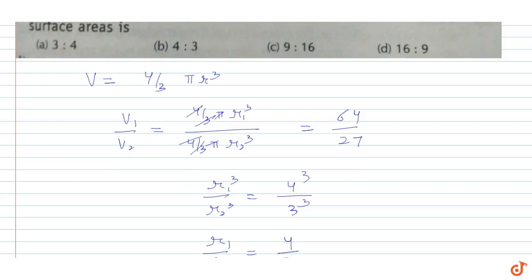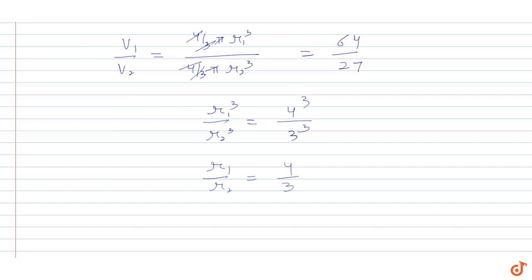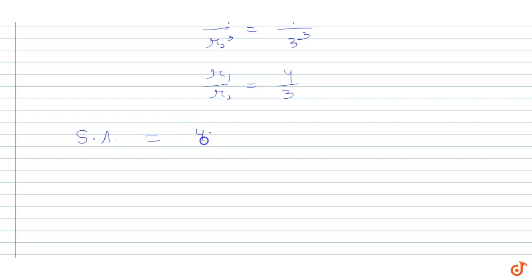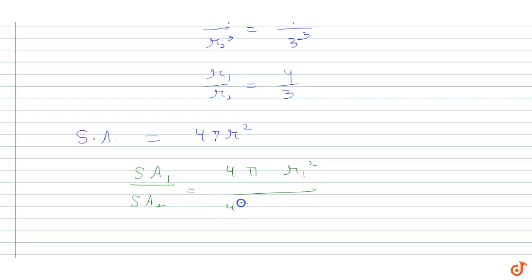Now we want the ratio of their surface areas. The surface area of a sphere is SA = 4π r². So SA1 / SA2 = (4π r1²) / (4π r2²). We cancel 4 and π.